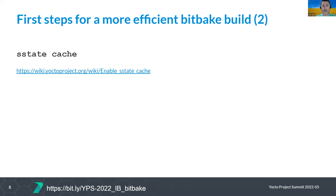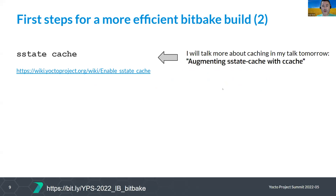S-State: I'll discuss in another talk tomorrow S-State and CCache and some ideas about using them both. Using cache is of course important, but what we see when we work with customers is that even if you work with S-State, usually some build has to be done, even if you are after a full build. You touch something, you get a new build, you wait — and in many cases you touch something and you wait for many things. I'll talk about the caching tomorrow.